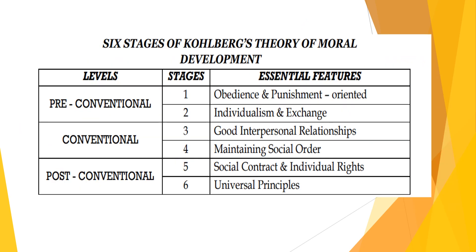The six stages of Kohlberg's theory of moral development are: obedience and punishment, individualism and exchange, good interpersonal relationships, maintaining social order, social contract and individual rights, and universal principles.